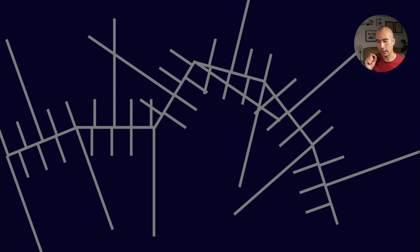So with pour point depressants, what we want is roughly a short backbone with very long arms that stick out. So those arms are what is disrupting the crystals from interacting with each other.